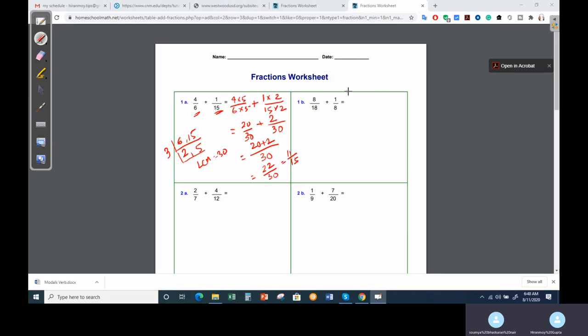Second problem is 8 and 18. You have to make LCM. 2 times 4 is 8, 2 times 9 is 18. So 2 times 4 is 8, 8 times 9 is 72. 72 you have to make.